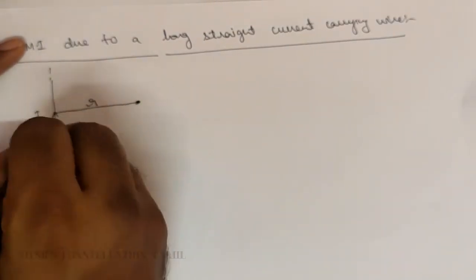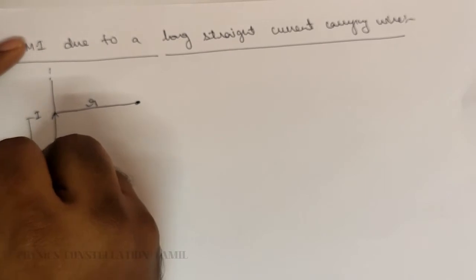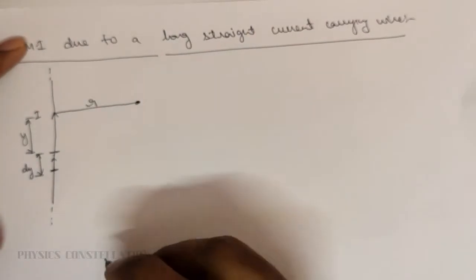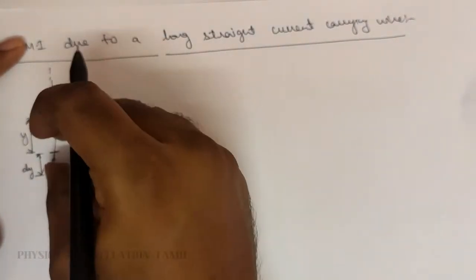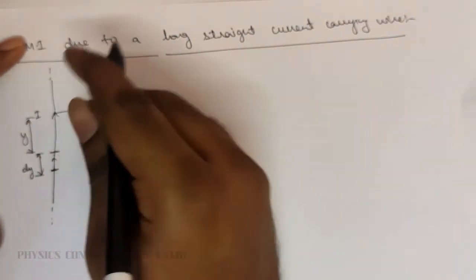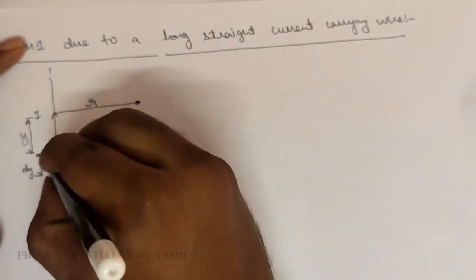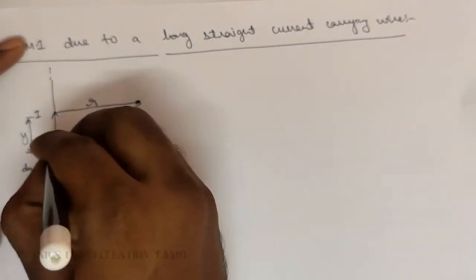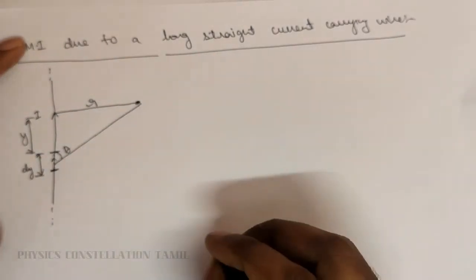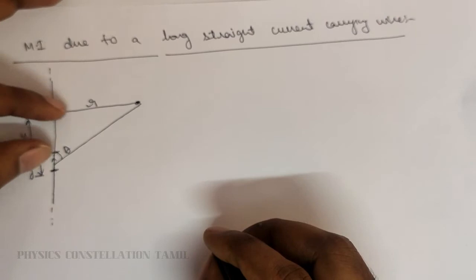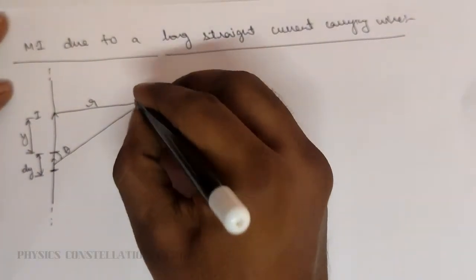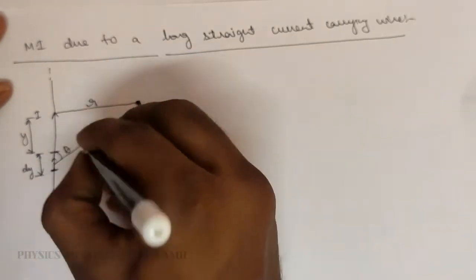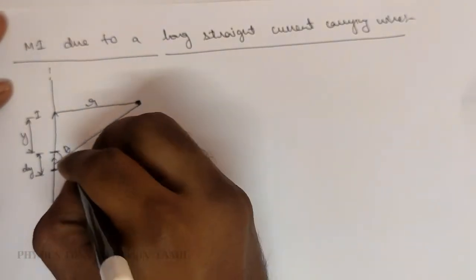From the elemental length dy at a distance y, the current is passing. Due to this current element, magnetic induction exists at point P. We can draw a line from the element to point P, and the angle between them is theta. Here, y and r are the two sides, and the hypotenuse using Pythagoras becomes the square root of r² + y².